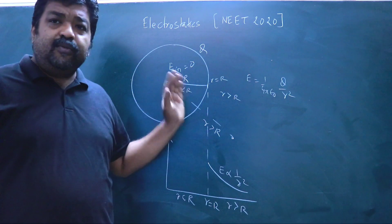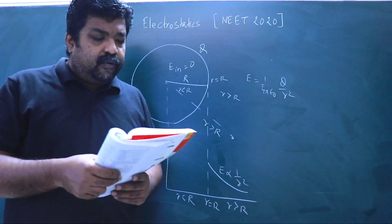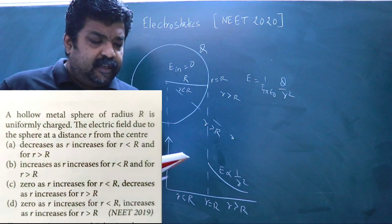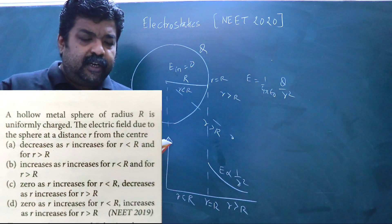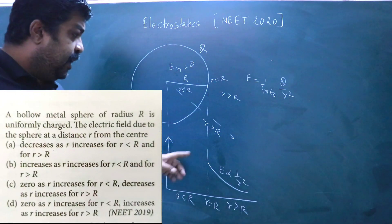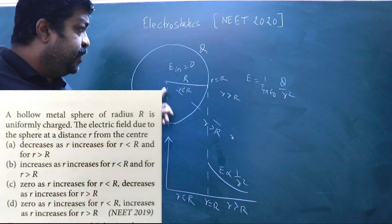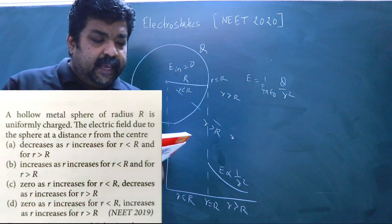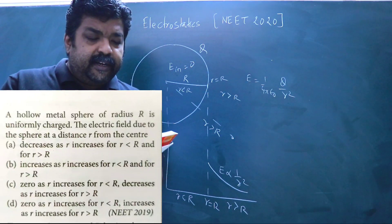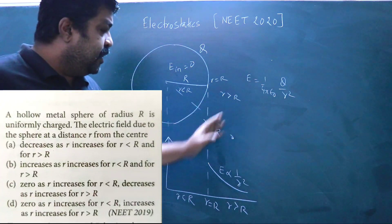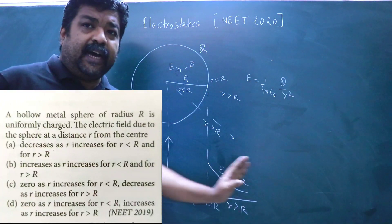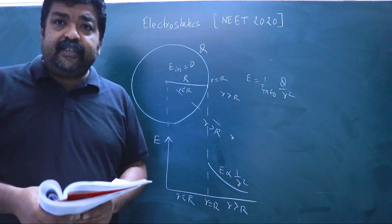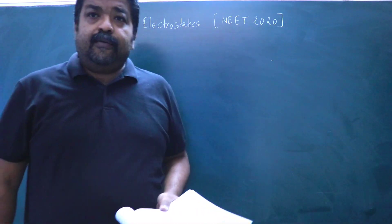This graph shows the variation of electric field intensity with distance for a hollow sphere. You can derive these results using Gauss's theorem. For this question, option C is the correct answer: the field is zero as r increases for r less than R (inside), and decreases as r increases for r greater than R (outside).